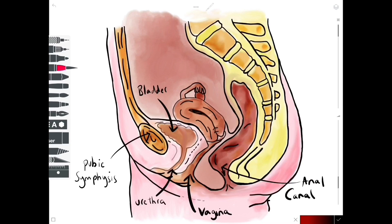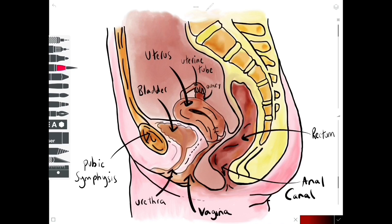Sitting in between the perineal body and the anococcygeal ligament is the anal canal, and continuous with the anal canal is of course the rectum. We can now move on and talk about some of the key developmental structures here — the reproductive structures. The uterus, the uterine tube, and the ovaries. Last but not least, we must not forget to label the cervix, which we can see at the end of the muscular tube, the vagina.